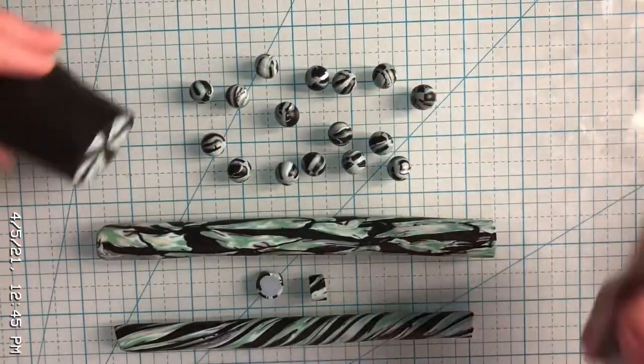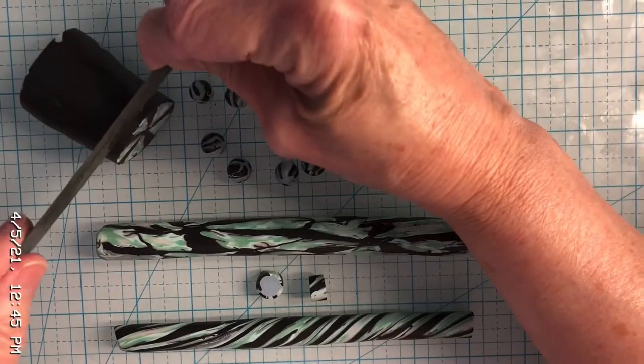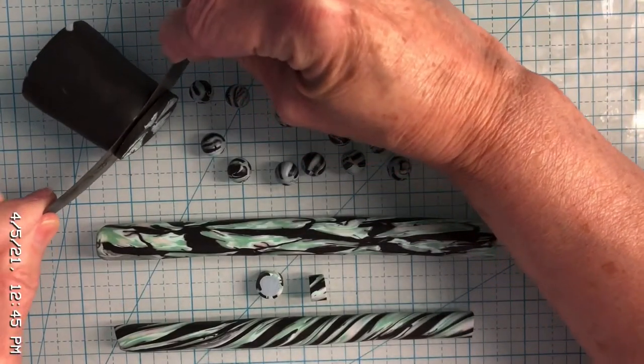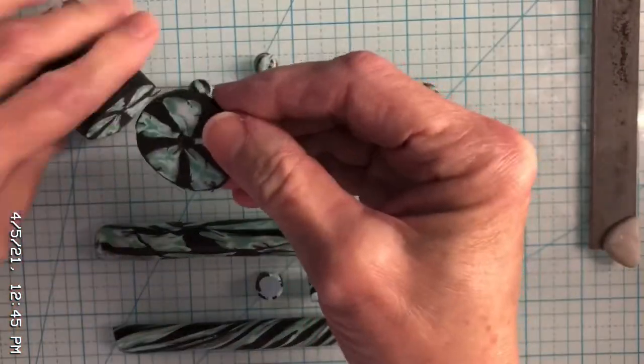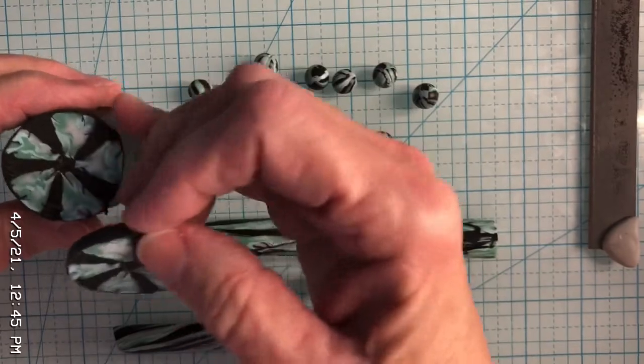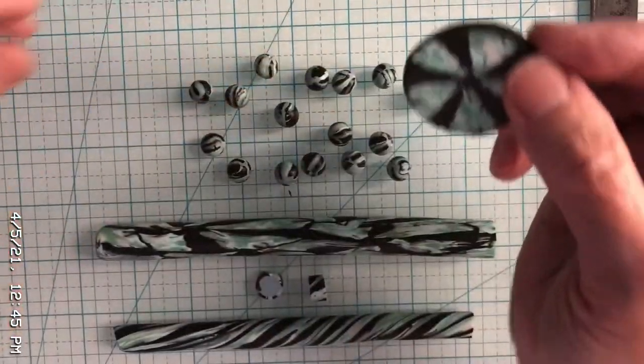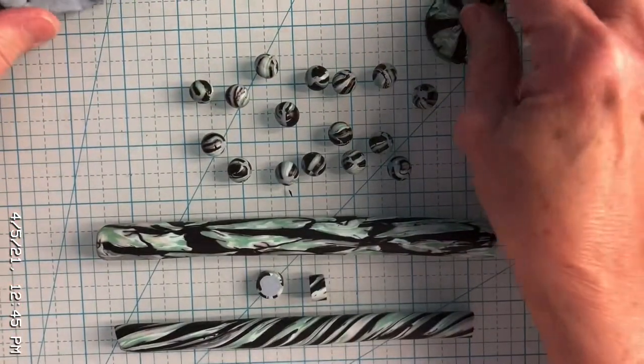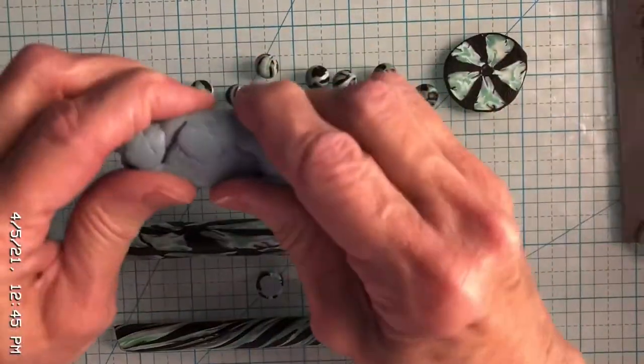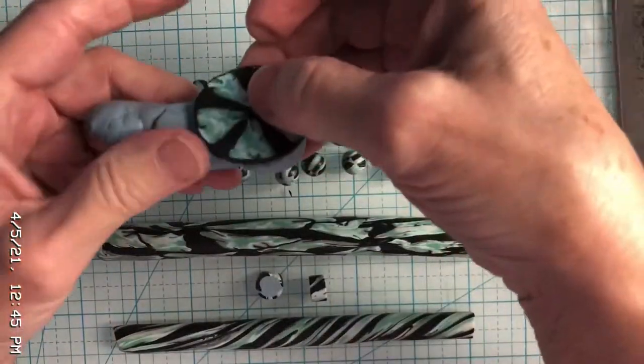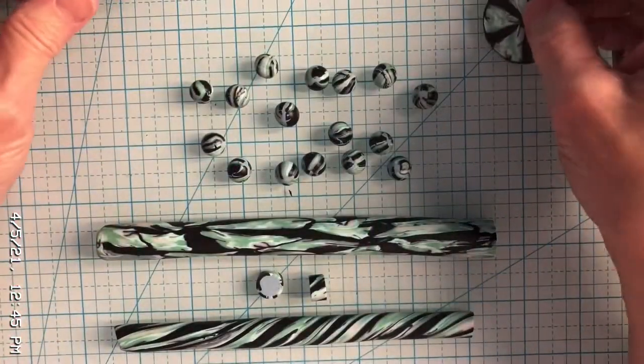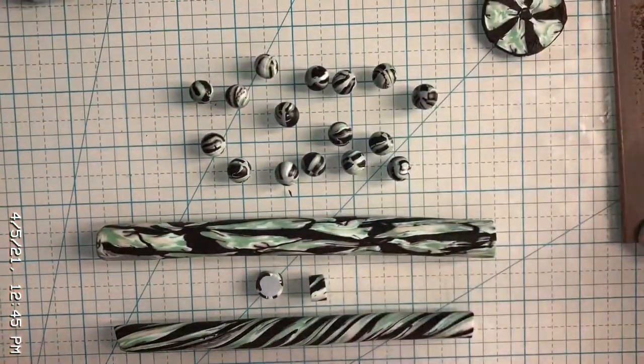Then what I did is I just cut off slivers - I'll show you what I did - I just cut off slices of my old cane that's been sitting there for years and years. I took those and on that other tube I made out of this color clay...